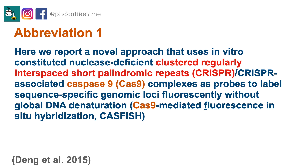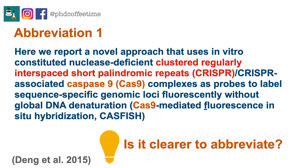The first question you need to ask yourself is: is it clearer to abbreviate? Sometimes when you have a long name that you need to use over and over again in the article, it would be better to save space and abbreviate. And often these abbreviations may be more recognizable in your scientific community, so using them will be clearer for the reader.